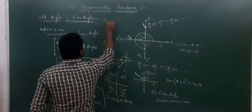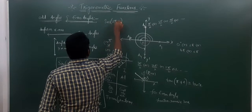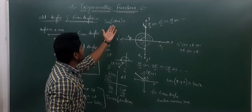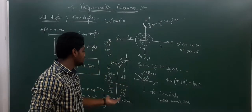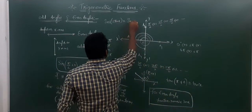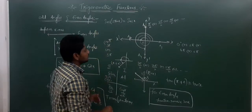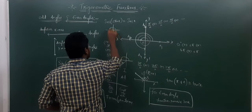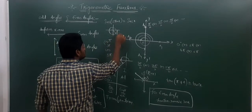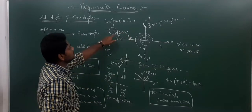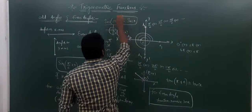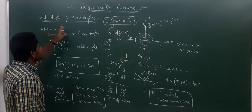Another example: secant of (2π − x). First, 2π is an even angle. For even angles, the function remains the same, so secant stays secant. 2π minus x means it is in the fourth quadrant. In the fourth quadrant, cos and secant are positive. Therefore secant of (2π − x) equals secant x. This is the concept of odd angles and even angles.